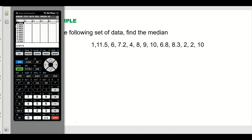Go back to STAT, number one, and hit Enter. Now you can see that your data is in ascending order: 1, 2, 2, 4, 6, 6.8, 7.2, 8, 9.3, 10, and so on. You can press the down arrow to scroll further.